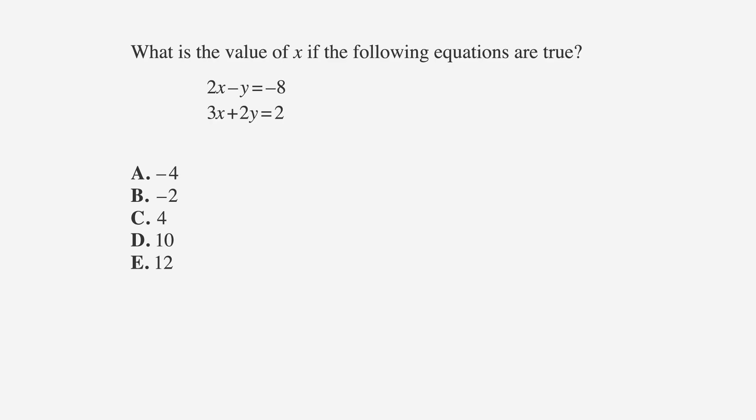What is the value of x if the following equations are true? 2x minus y equals negative 8, and 3x plus 2y equals 2. A is negative 4, B is negative 2, C is 4, D is 10, and E is 12.